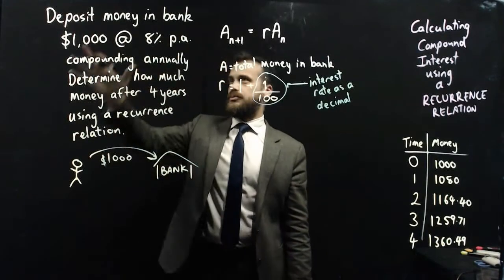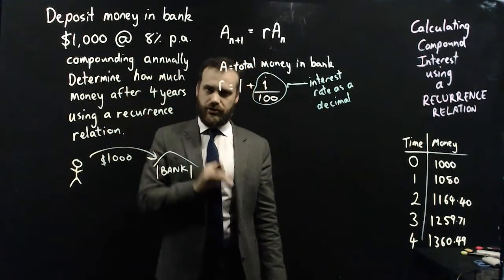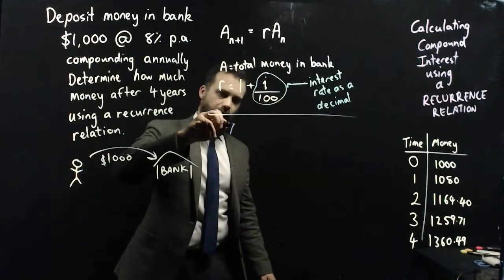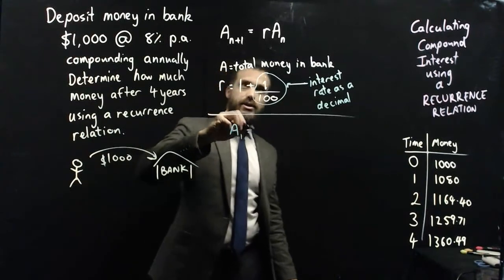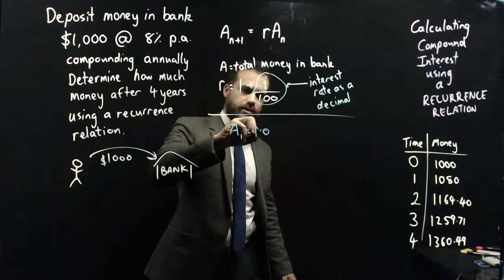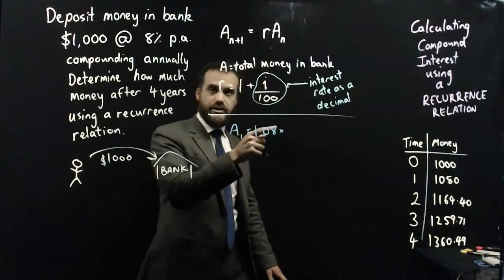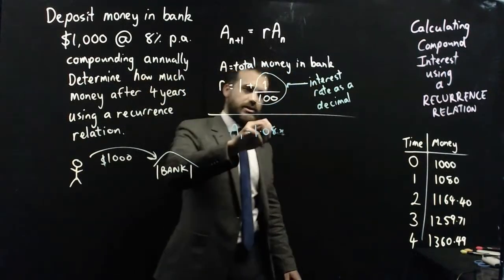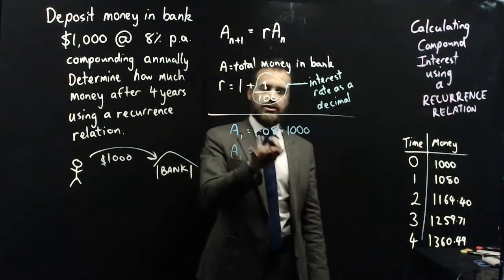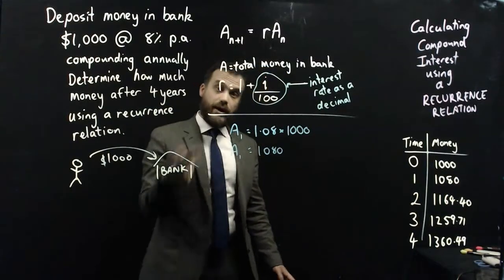What the question asked us was to determine how much money after 4 years using a recurrence relation. The way that we do it is to say A(1) is equal to r, which is 1 plus 0.08, 1.08, times A(0). A(0) is time zero. We put a thousand dollars in the bank, and that means that A1 is going to be 1.08 times a thousand, which is $1,080.